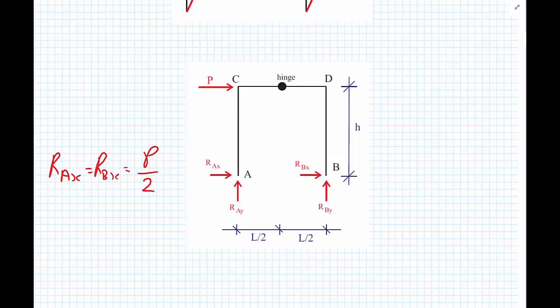Also, just on inspection of the structure, we can see that we would expect these horizontal forces, P upon 2, to be pointing to the left because P is pointing to the right. P upon 2. And also we can kind of guess or use intuition that RBY would be pointing upwards.